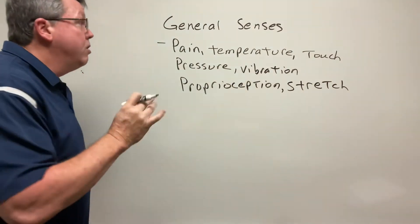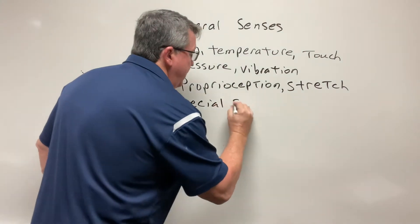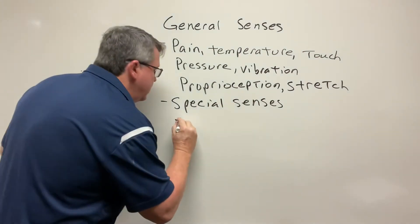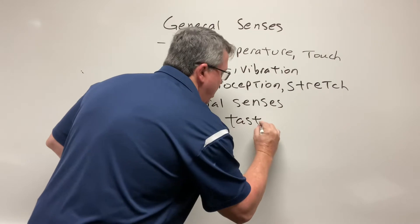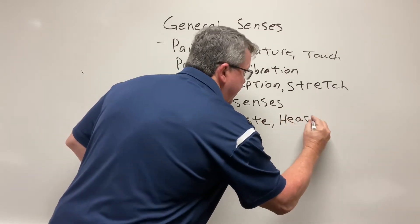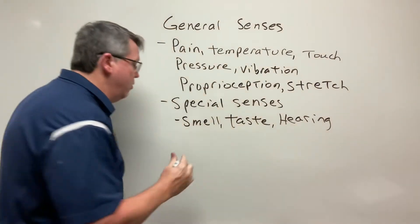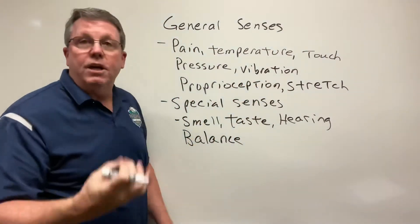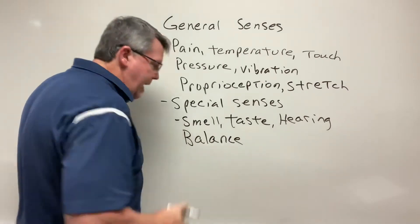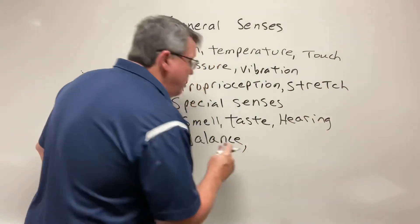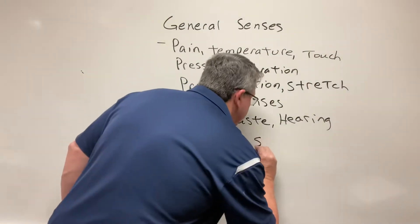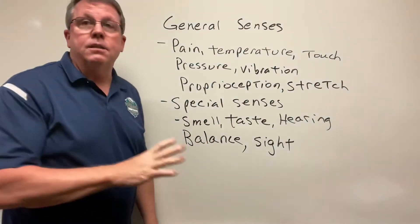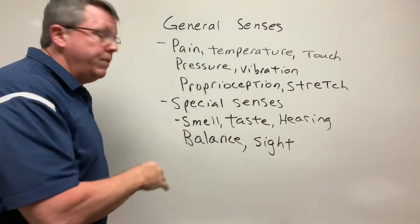The special senses are usually associated with an organ — smell with your nose, taste with your tongue, hearing with your ears. Your middle ear has organs responsible for balance, which relates to proprioception since your body needs to know its position in space to maintain balance. Some books call this equilibrium. We also have sight with our eyes. I'll cover the special senses in another video.